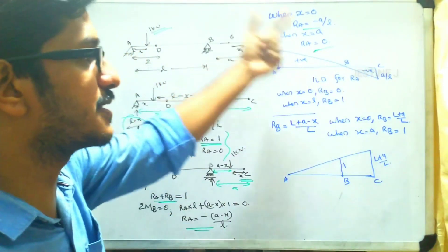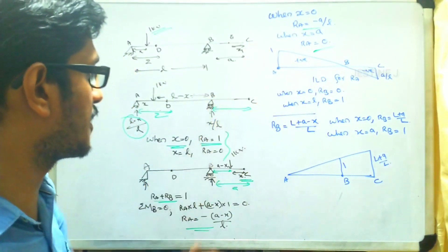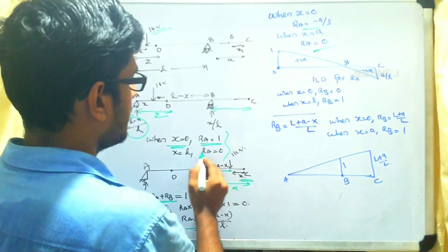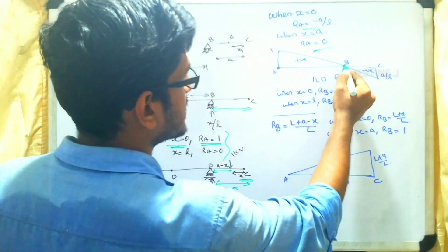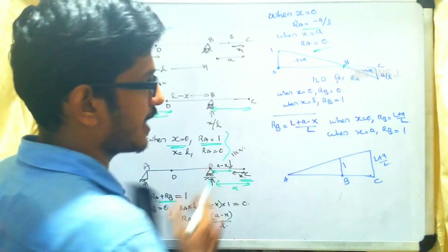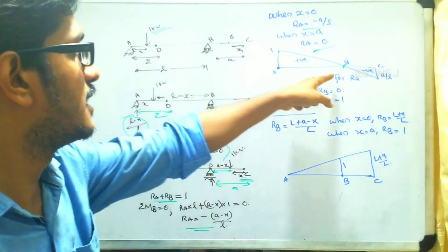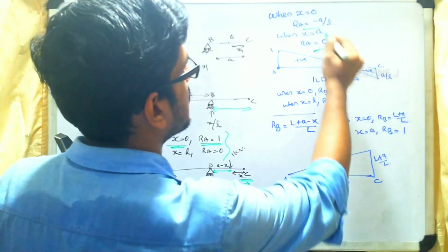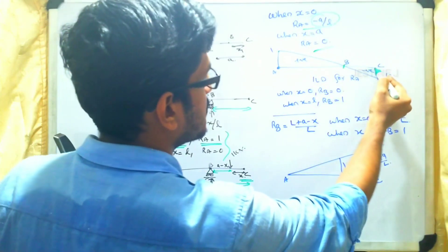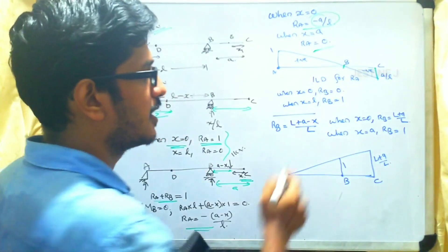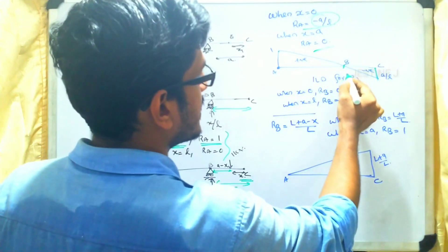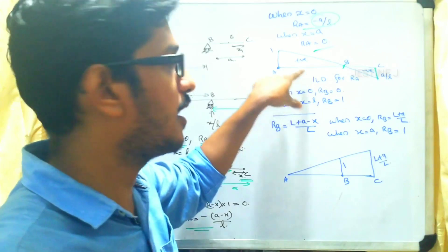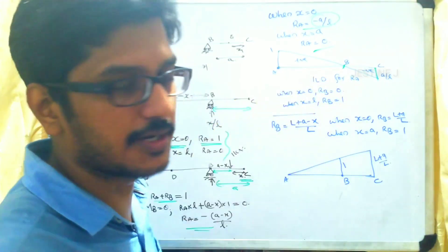Drawing the ILD for RA: when x equals 0 (at A), the value is 1; when x equals L (at B), the value is 0. For the overhanging portion, when x equals 0 (at B side) the value is negative (minus A/L), drawn below the baseline, and when x equals A (at C) the value is 0. This is the ILD for reaction A.